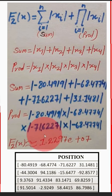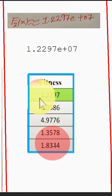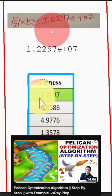Then we got the final solution that is sum plus product, and we got the approximate value. You can see in the numerical example we also obtained this value 1.2297.